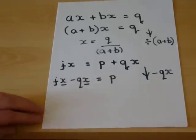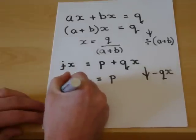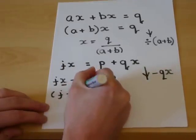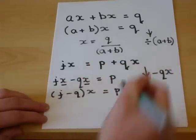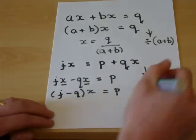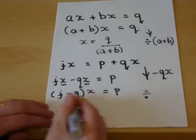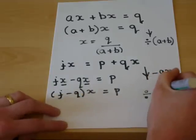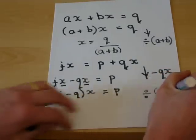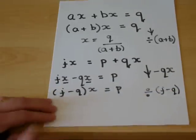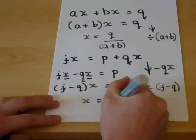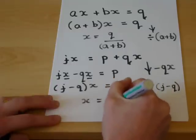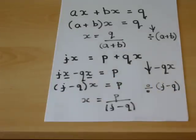So we factorise. We have a j minus a q times by the x equals the p. And to finish off with, we divide by the coefficient of j minus q. So x equals p divided by j minus q. And that is an equation in terms of x.